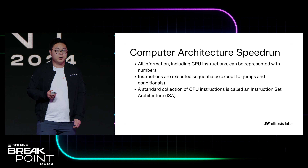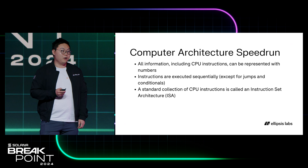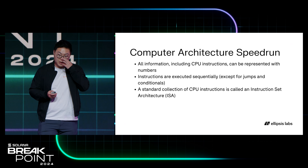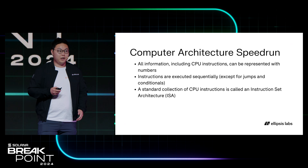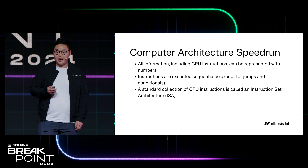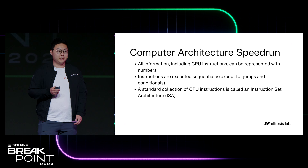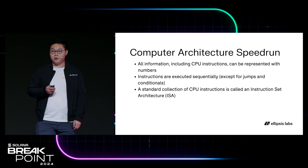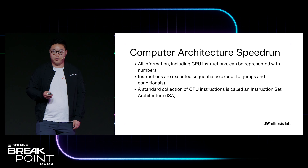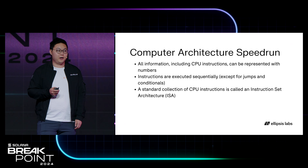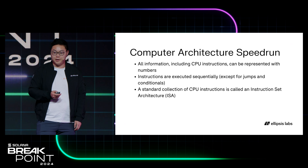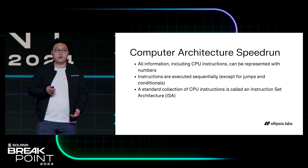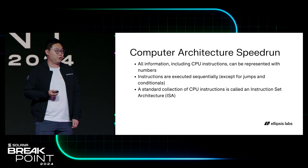Programmers know those as loops or if statements. There are a few key takeaways: first, all information — including the CPU instructions themselves — can be represented with numbers, and all instructions act on numbers. Instructions are executed sequentially; the CPU receives a list of instructions and by default executes them one after the other, though jumps and conditionals move the instruction pointer to a different place in the list. A standard collection of CPU instructions is known as an instruction set architecture, or ISA.